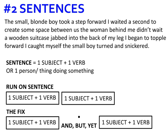A complete sentence is one subject plus one verb — or an easy way to remember this: one person or thing doing something. So I want to notice subjects and verbs in the error paragraph. 'The small blind boy took a step forward' — my subject is 'boy' and he is 'taking.' If I shove together two sentences, two subjects and two verbs, it's like a train wreck. That's called a run-on sentence. Run-on sentences are a big no-no in writing.